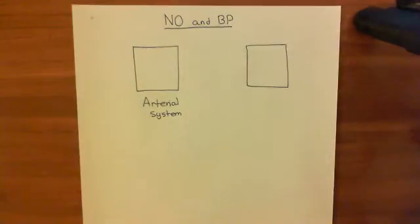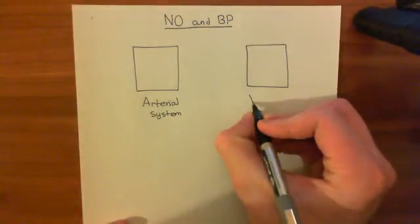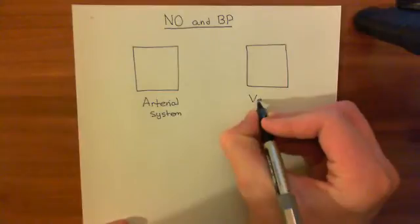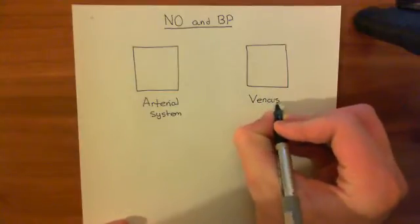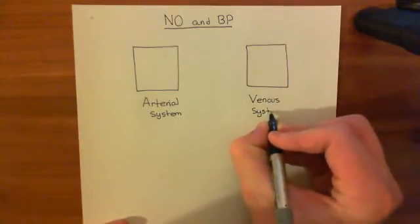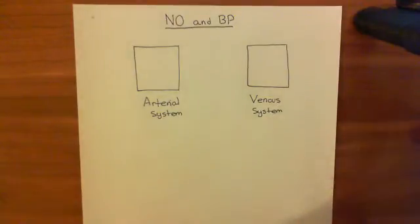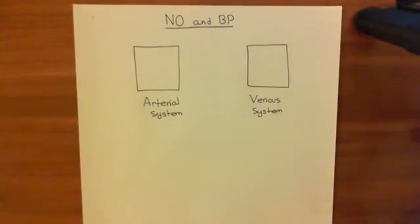And then there's another box over here, which is the venous system. This represents the big veins: the vena cavae — superior and inferior — the azygous vein, the brachiocephalic veins, the iliac veins — big veins basically.